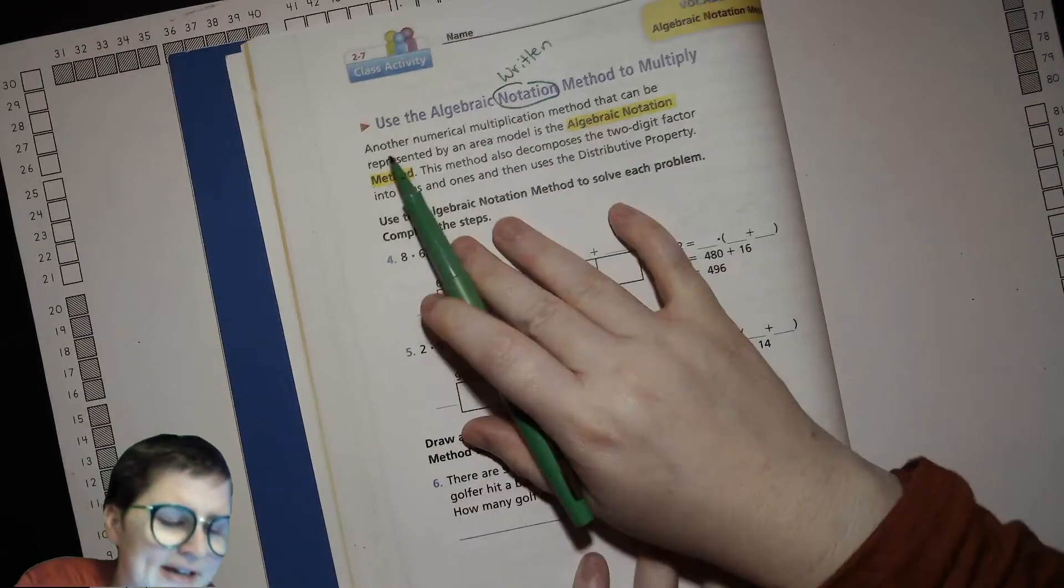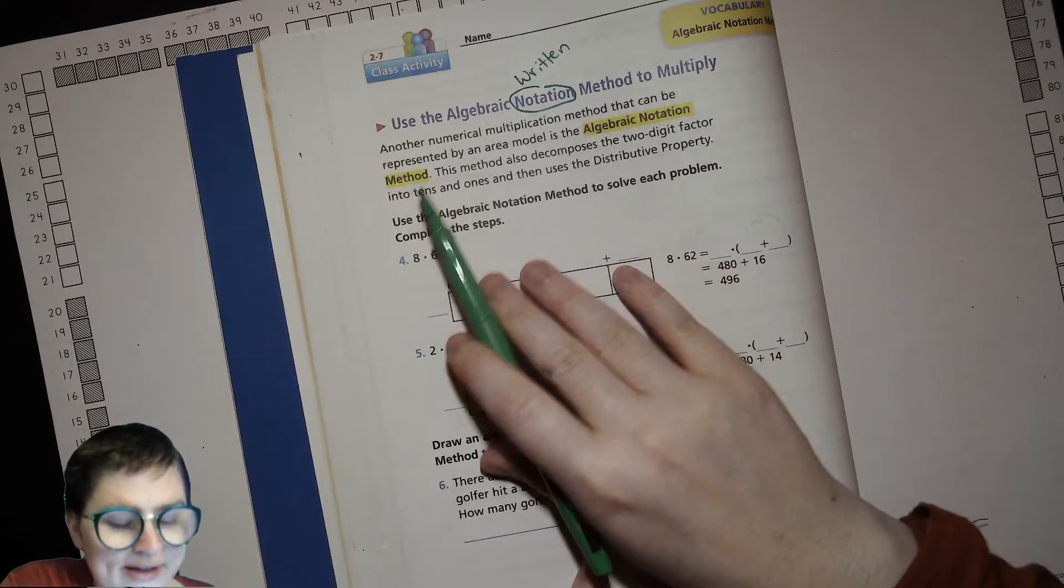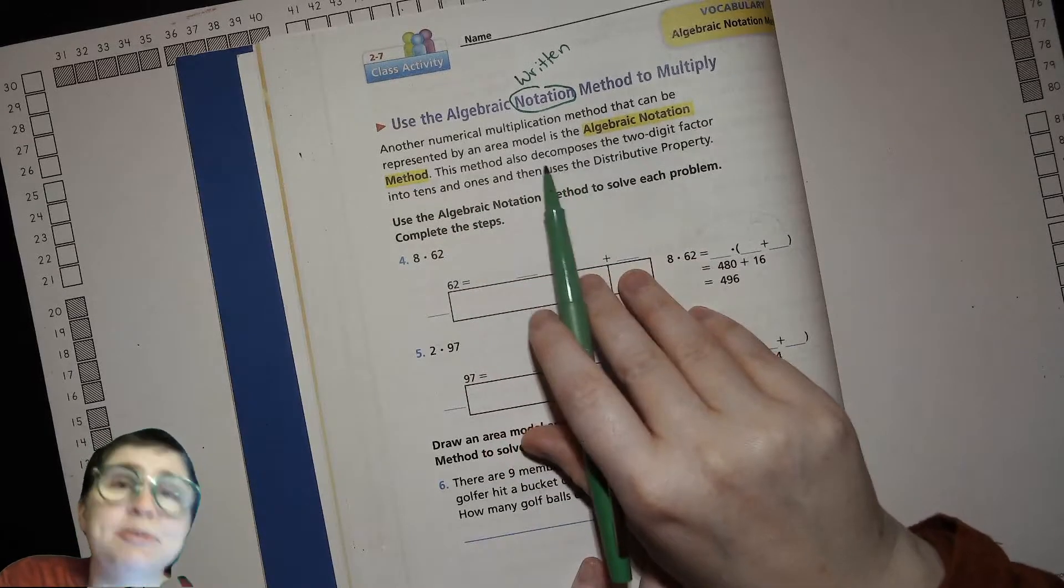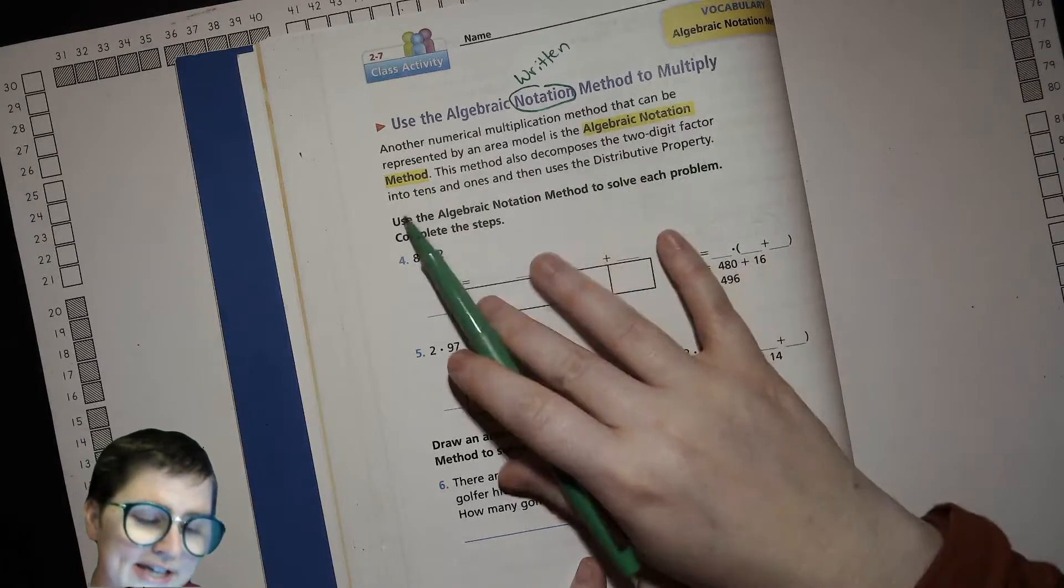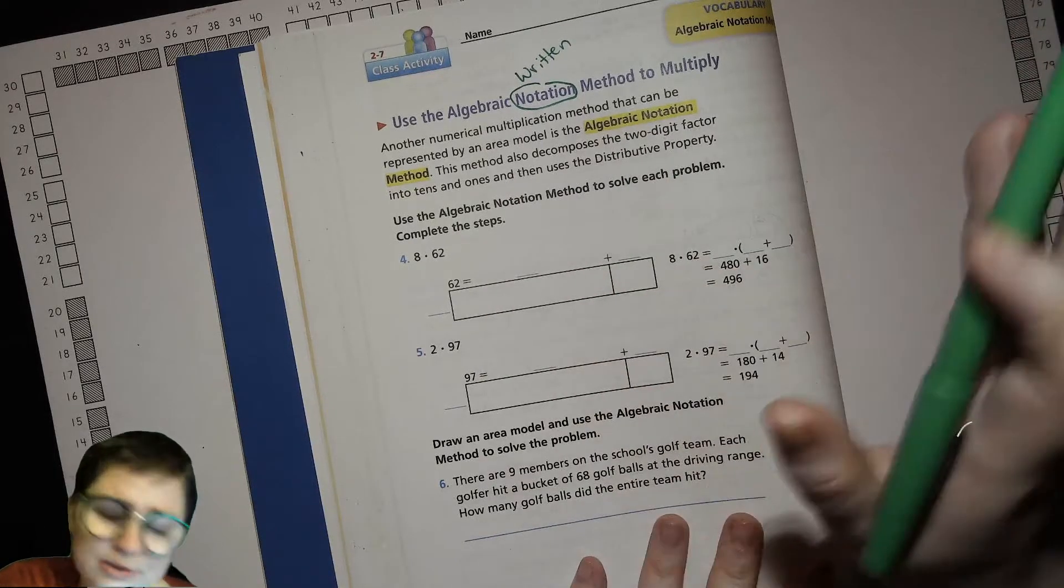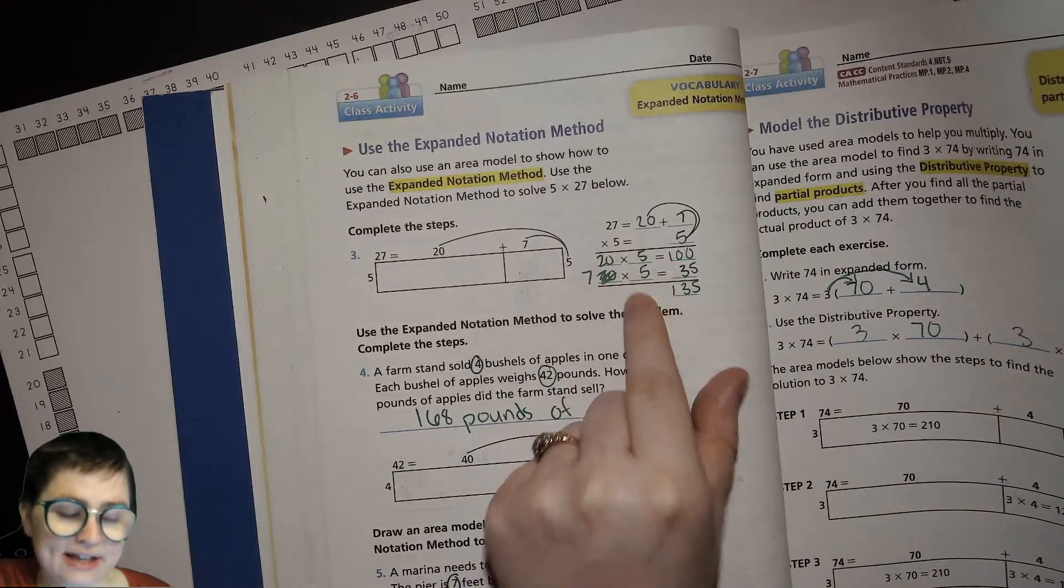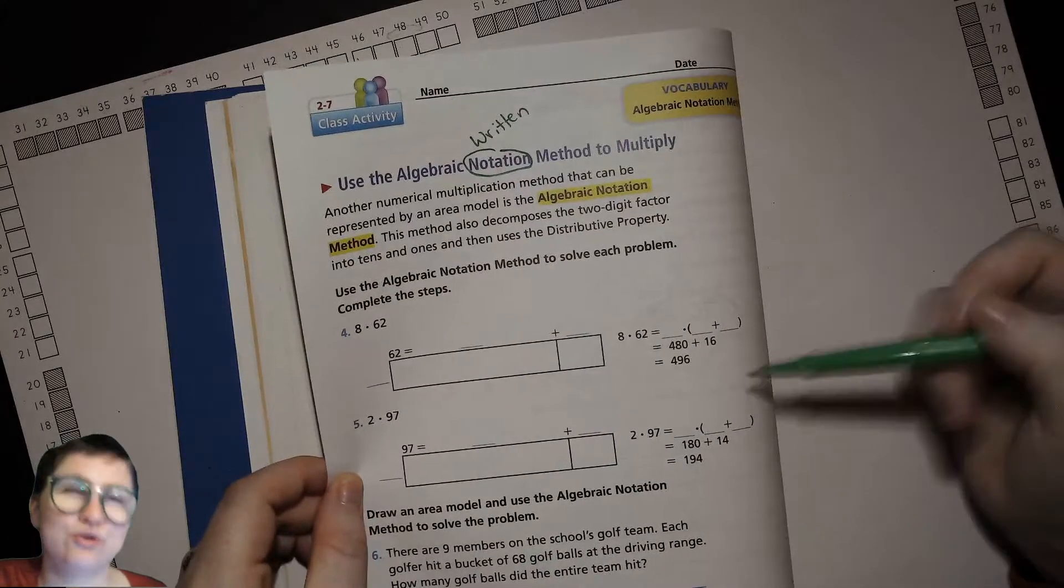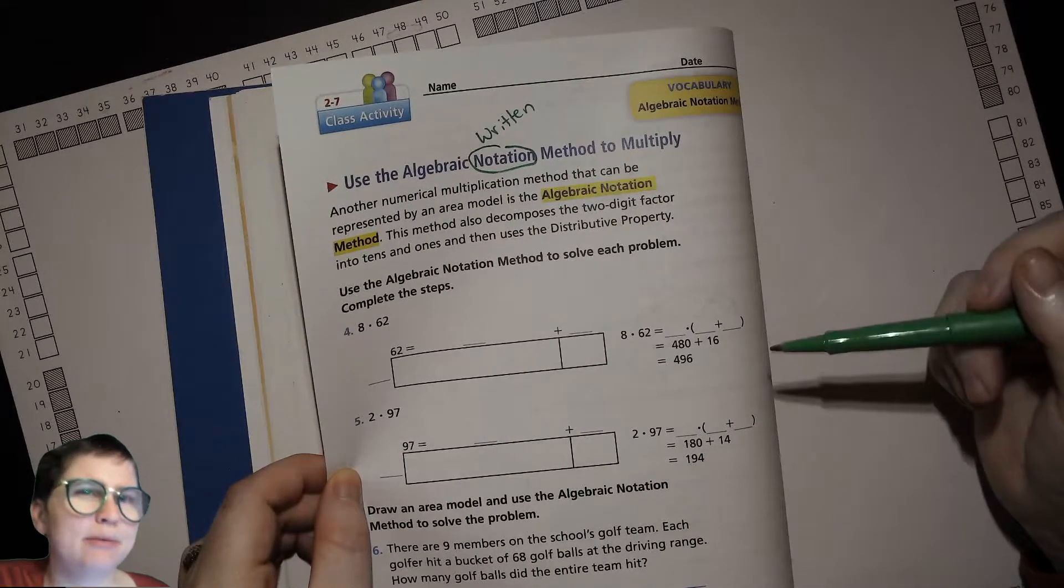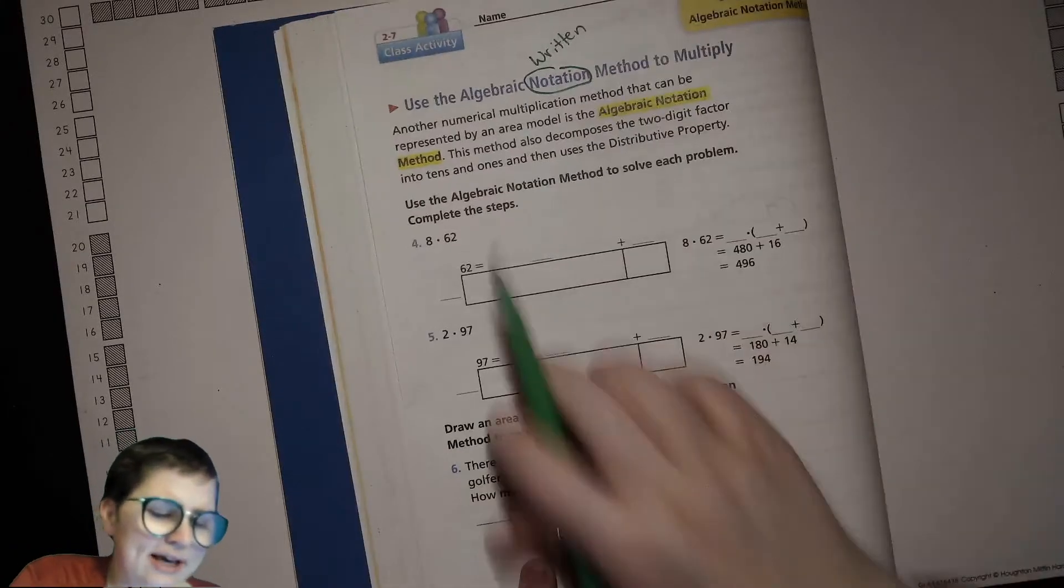Let's talk about that. Another numerical multiplication method that can be represented by an area model is the algebraic notation method. This method also decomposes, which means breaks up, right, the two-digit factor into tens and ones, like expanded form. Then uses the distributive property so it's very similar to what we've been doing.